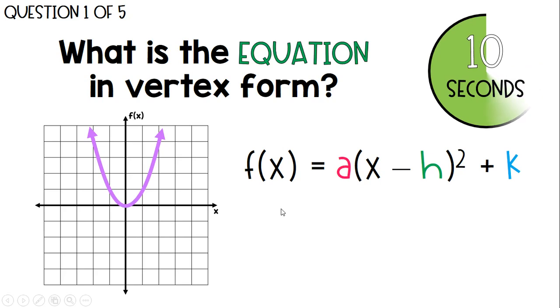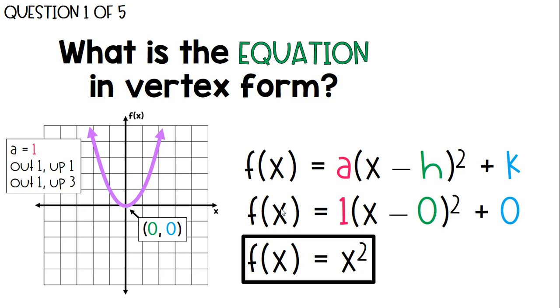First one's the easiest one. Determine the vertex and your a value. Since this one has a vertex of 0, 0, and an a value of 1, and I know it's an a value of 1 because I'm simply going from the vertex, I'm going out 1, up 1, out 1, up 3, and it's that plus 1, plus 3 rule. I know it's in line with my parent function, and it actually is exactly my parent function.